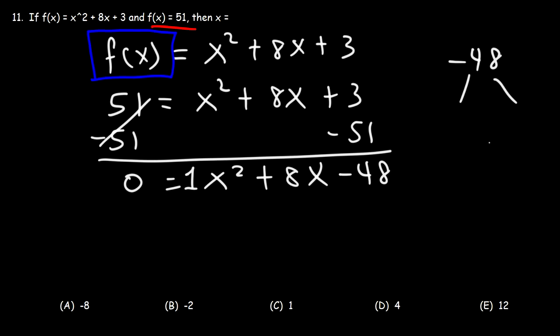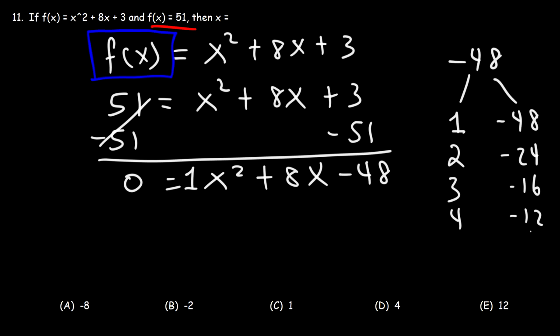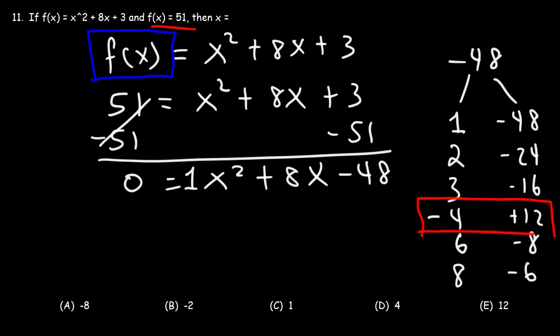Let's make a list. Negative 48 divided by 1 is negative 48; divided by 2 is negative 24; divided by 3 is negative 16; divided by 4 is negative 12; divided by 6 is negative 8. Notice that negative 4 and 12 add up to positive 8, and negative 4 times 12 still multiplies to negative 48. So this is the pair of numbers we want to use.